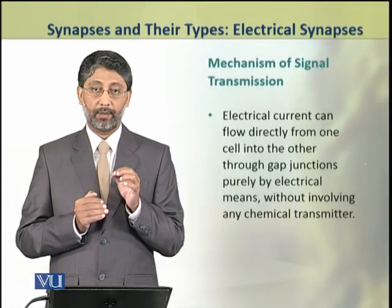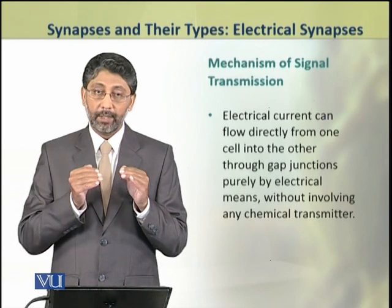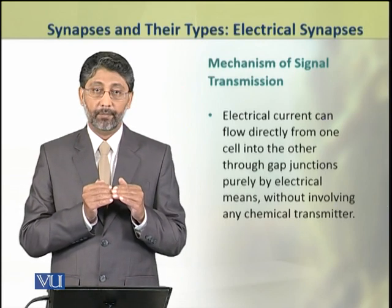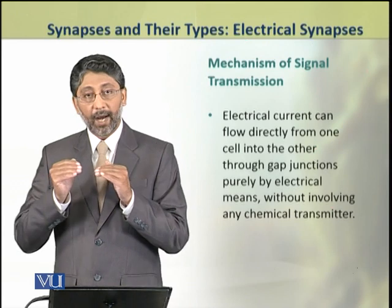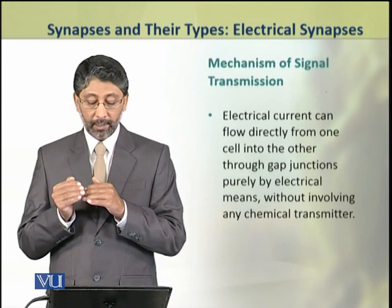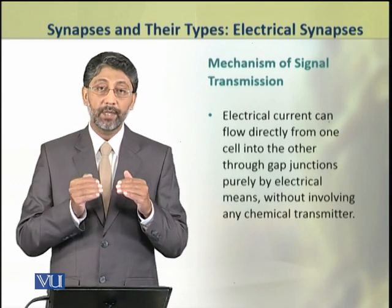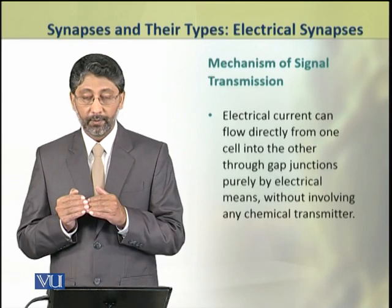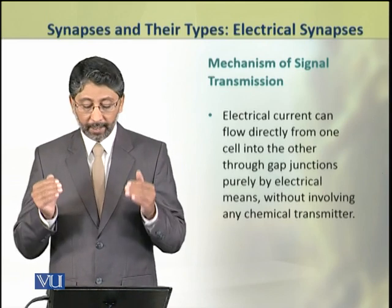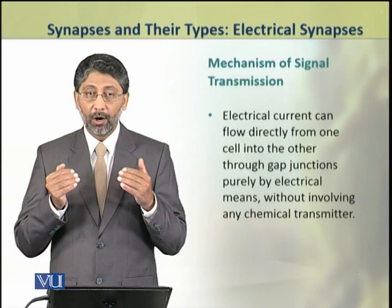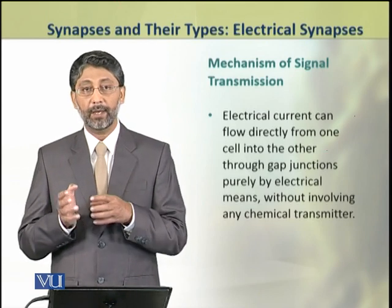Dear students, electric current can flow directly from one cell into the other through the gap junction proteins purely by electrical means, without involving any chemical transmitter.